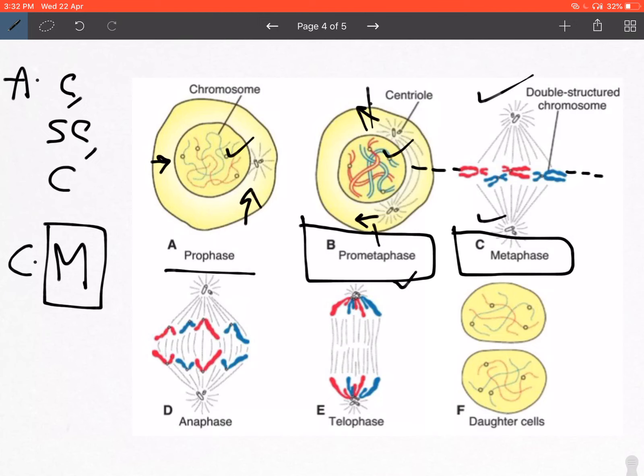What is coming out from the centrioles is known as microtubules, and these microtubules form what is known as the spindle apparatus. The spindle apparatus is formed and the microtubules are attached to the centromere of the chromosome. The microtubules attach here to the centromere on either side.